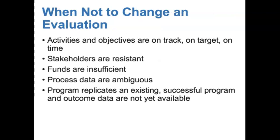Sometimes it's not appropriate to make changes — for instance, when everything is working and you're meeting your targets on time. Another time it's not appropriate to make changes is if key stakeholders are resistant or you don't have enough money in your budget to complete the change. Other reasons not to change include when process data are ambiguous and when the program is replicating another successful program and the outcome data are not yet available.